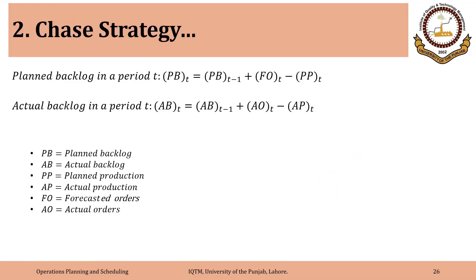We will be requiring two formulas to solve the SNOP grid for a chase strategy. The first is for planned backlog in period T, which equals planned backlog from the previous period, plus forecasted orders in the current period, minus planned production in the current period. The planned backlog from the previous period plus forecasted orders is what we have to deliver, and minus planned production is what we have.